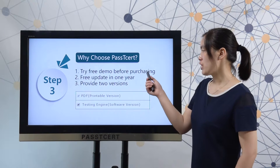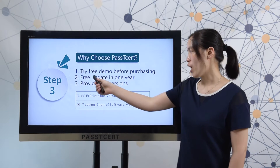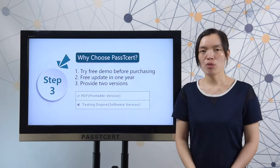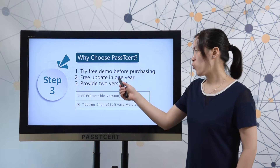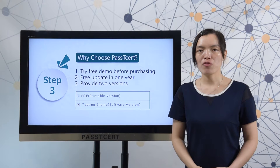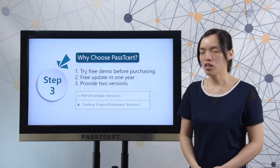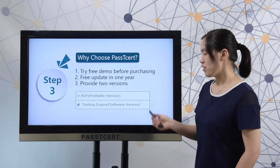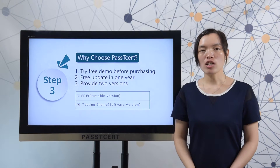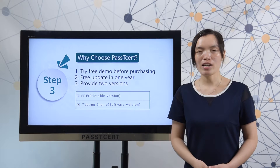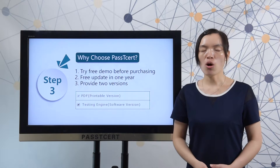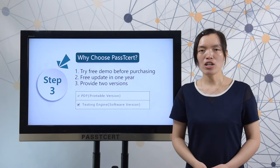Before you decide to make a purchase, you can try a free demo first. PathT3 provides free updates for one year. PathT3 provides two versions for this material: one is PDF and the other is software. The PDF version is convenient for you to read and study — you can print it out to read all the questions and answers anywhere.